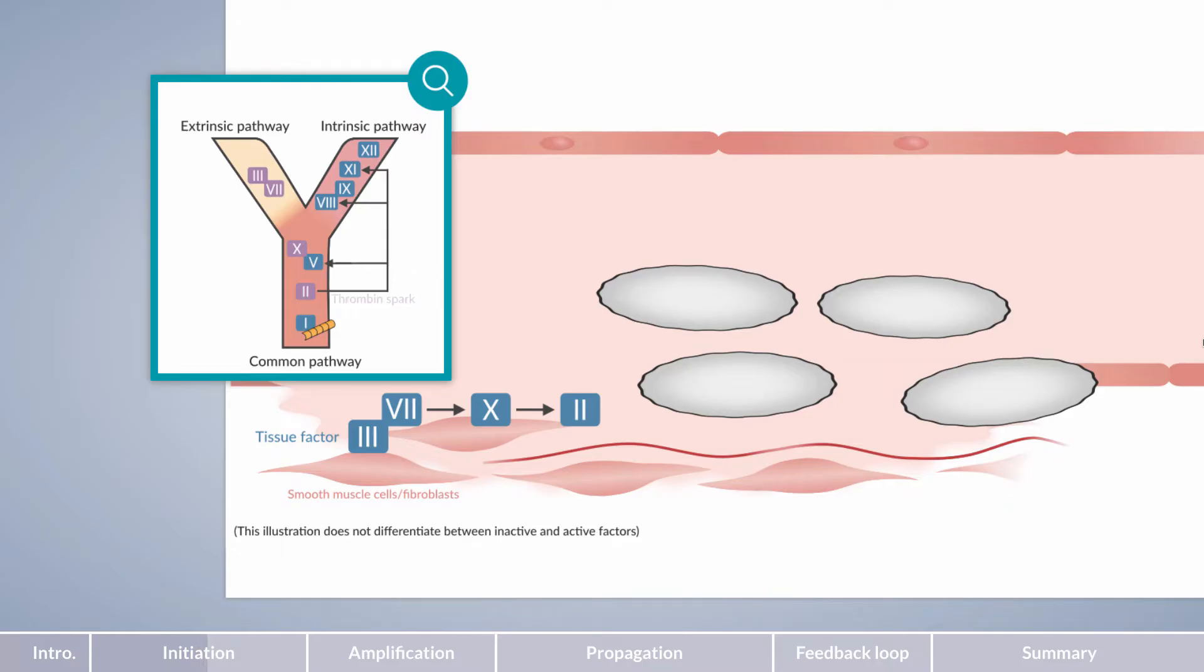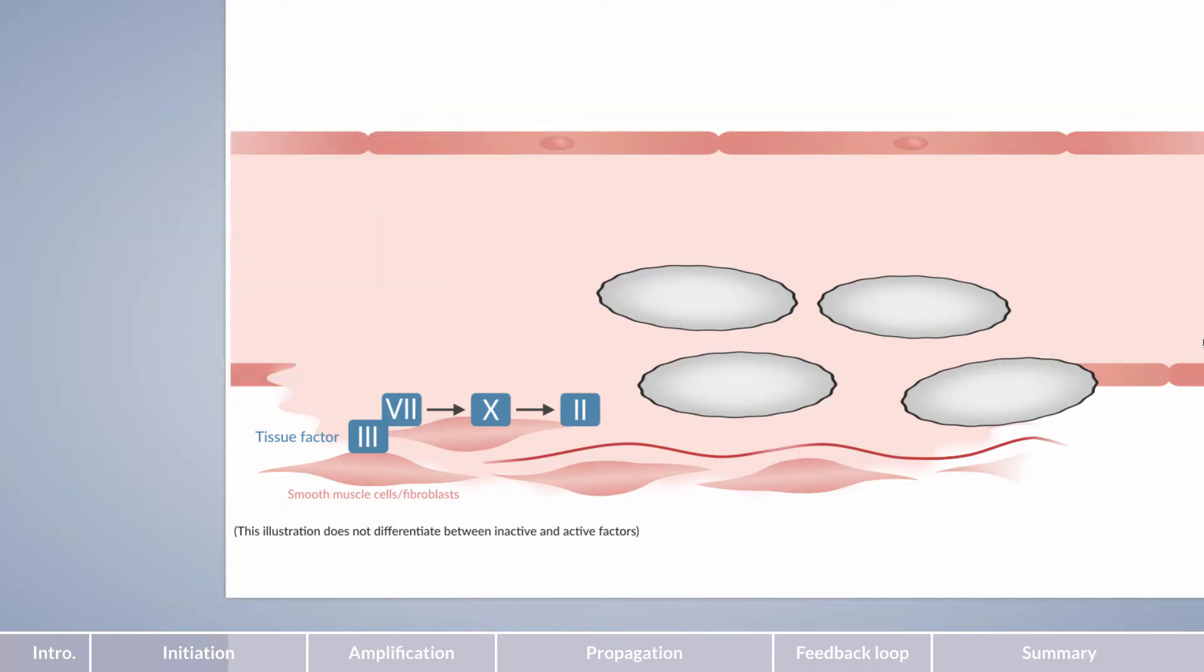Accordingly, the generated thrombin is referred to as the spark. The goal of this thrombin spark is to initiate a feedback loop between the extrinsic and intrinsic pathways, which we'll take a closer look at in a moment. But first, let's discuss the special features of the cell-based model.